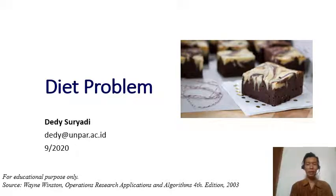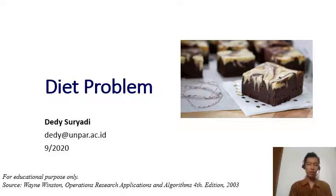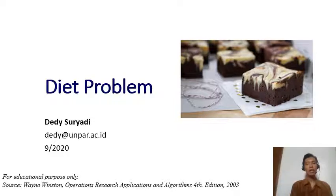Hello and welcome back to the second week of the Operations Research 1 course. Last week you saw that to formulate a linear programming problem you need to have four characteristics: the decision variables, the objective function, the constraints, and the sign restrictions. This week we are going to look at some typical linear programming problems that might give you ideas on how to formulate a real-world problem into a linear programming problem.